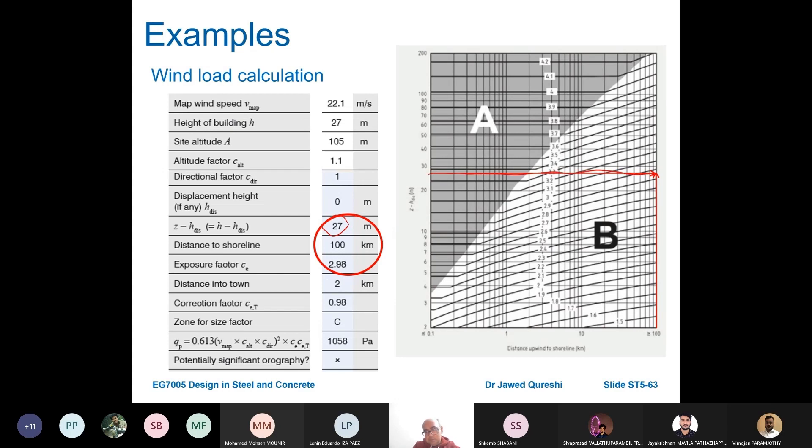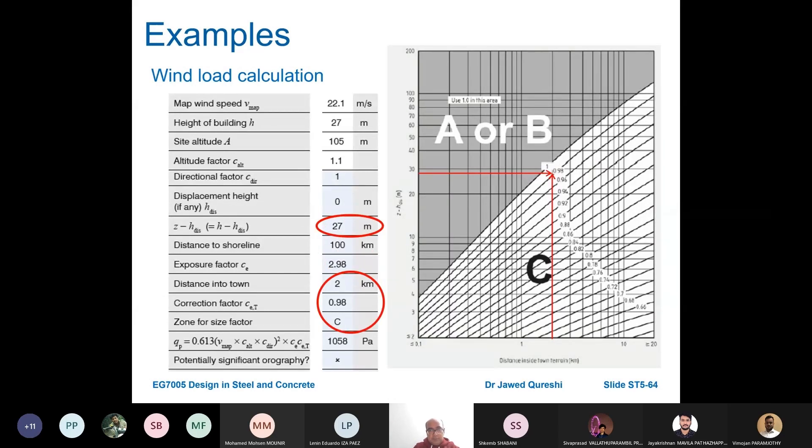Z minus h_distance is 27 because h_distance was zero. Corresponding to 27 and your distance from the shoreline of 100, the c_altitude factor will be equal to 2.98. Then we want to find out zone factor. Distance to town is given, z minus h is worked out. The c_e,t factor comes out as 0.98.